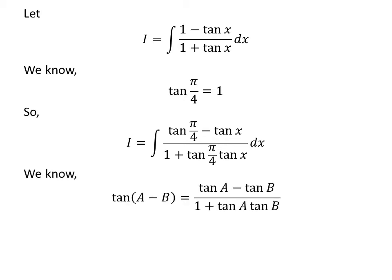We know the trigonometric identity: tangent of a minus b is equal to tangent of a minus tangent of b upon 1 plus tangent of a times tangent of b. Applying this identity gives us i is equal to the integral of tangent of pi upon 4 minus x, with respect to x.